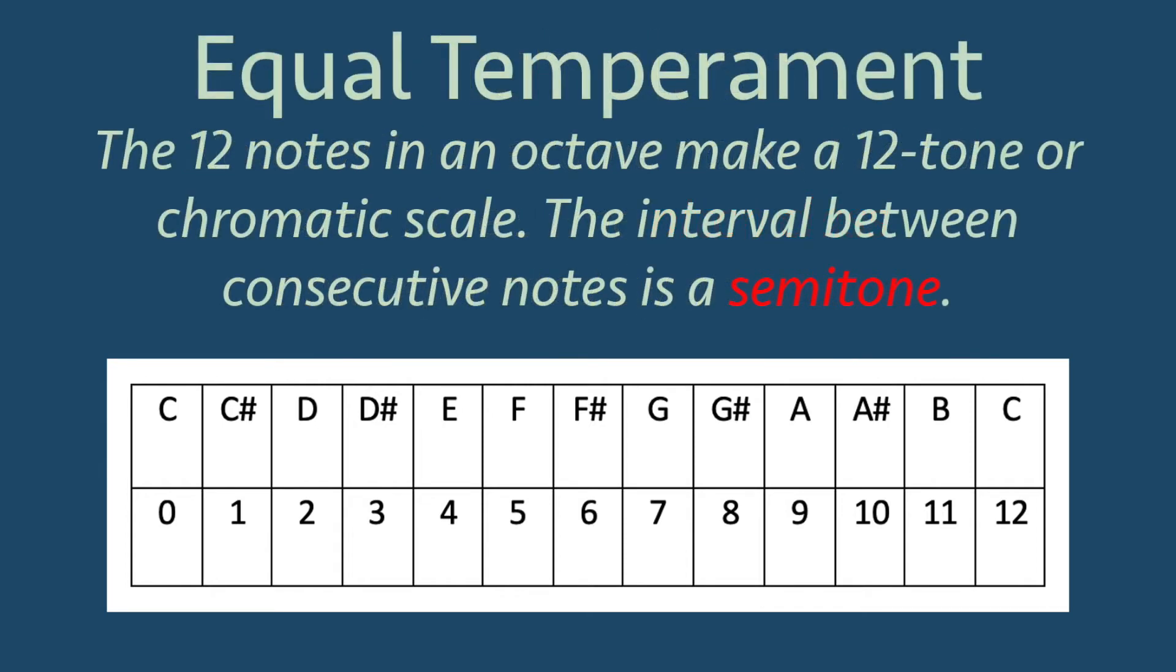This tuning system is very common in western music and is called a 12-tone or chromatic scale. The interval between consecutive notes in the chromatic scale is called a semitone.